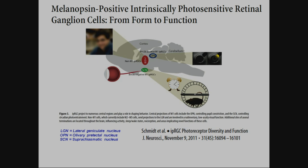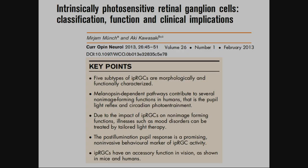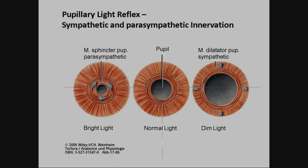Overview: we have roles in vision, control of the circadian clock, and control of pupillometry — the sympathetic and parasympathetic reaction. Five types are characterized. The post-illumination pupillary response is a promising non-invasive behavioral marker of IPRGC activity, as of around 2013. The pupillary reflex shows us whether the cells are working or not in elderly people.